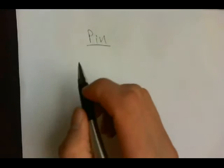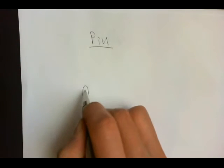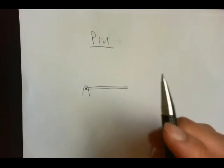So next is the pin. A pin is the same as a hinge. The only difference is a pin is only connected to one member, like this.